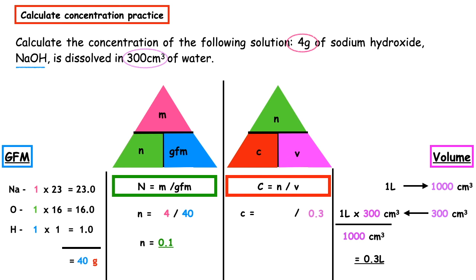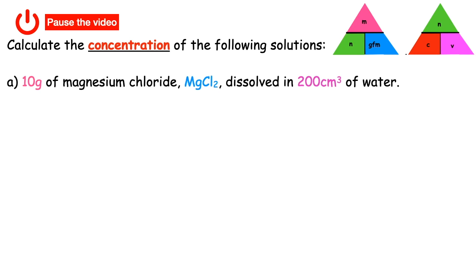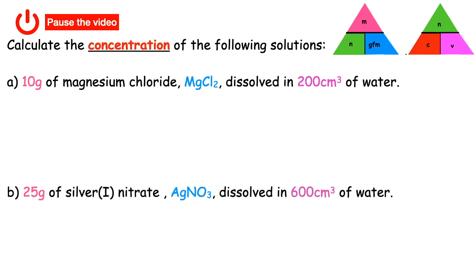Substituting into our final equation: concentration equals 0.1 moles divided by 0.3 liters, which gives a concentration of 0.3 moles per liter. Here are two more examples for you to have a go at — pause the video and when you are ready you can press resume and the answers will pop up on the screen.